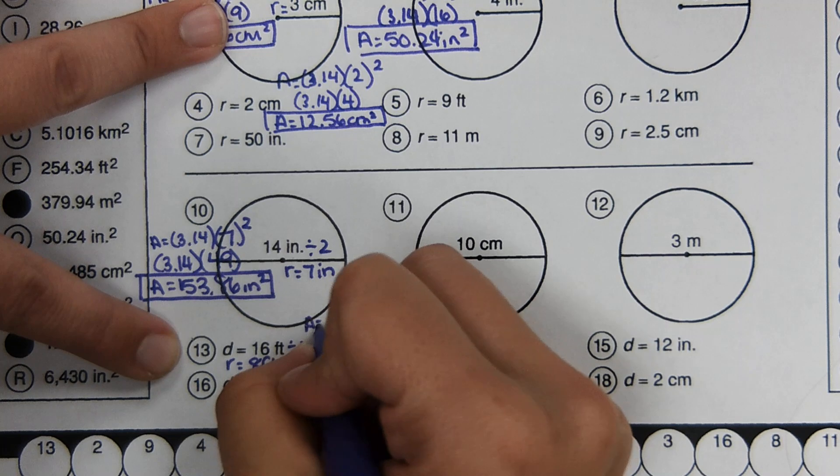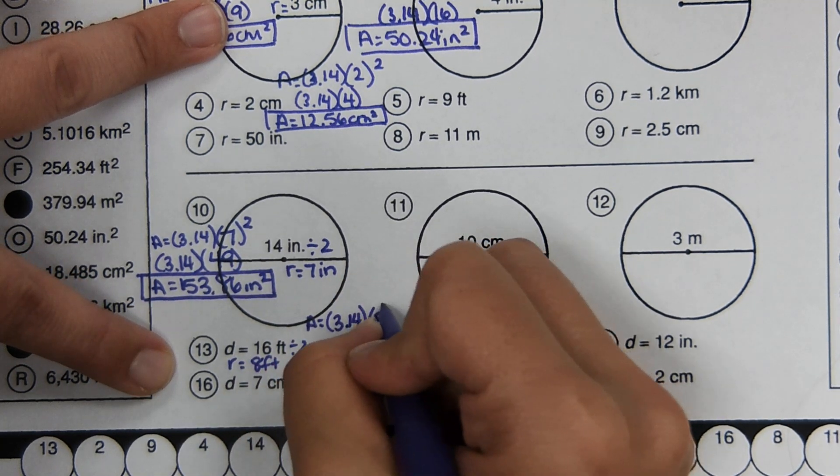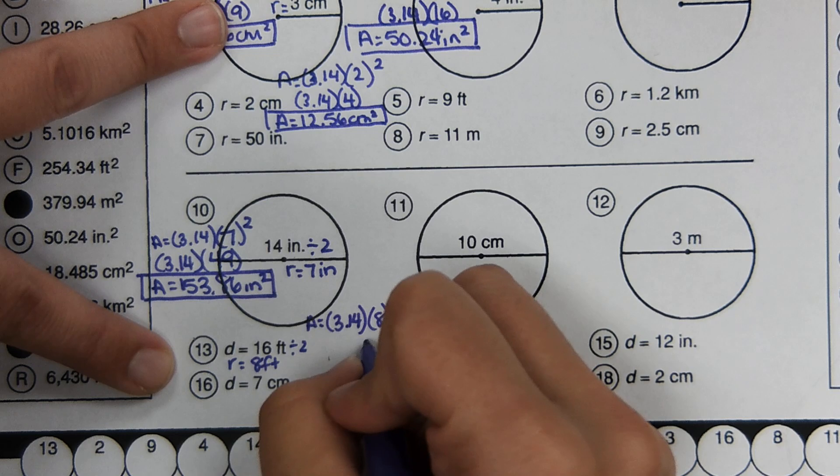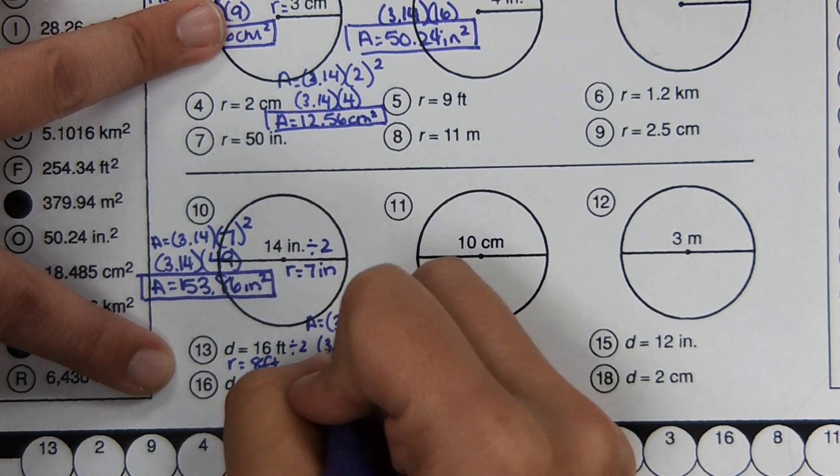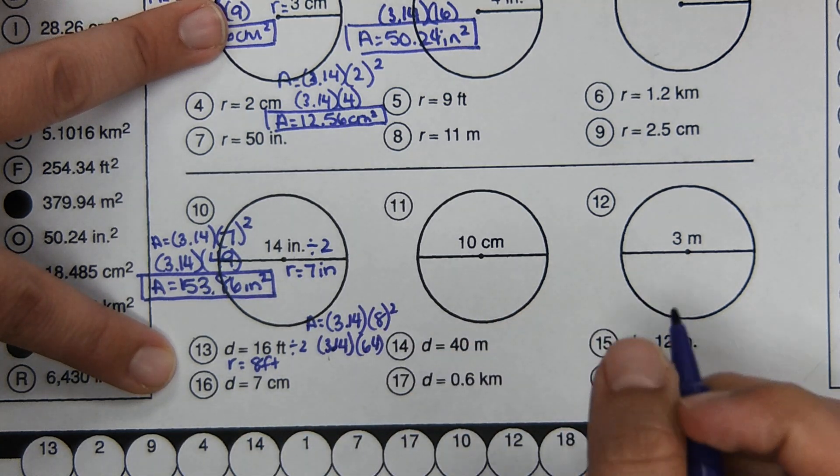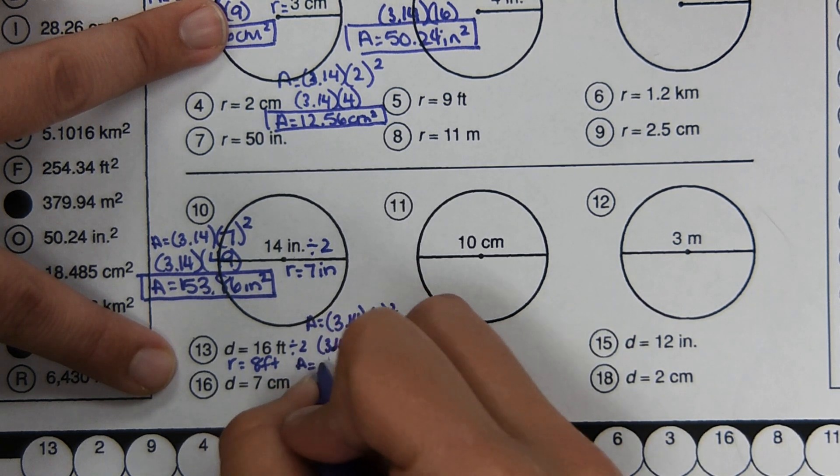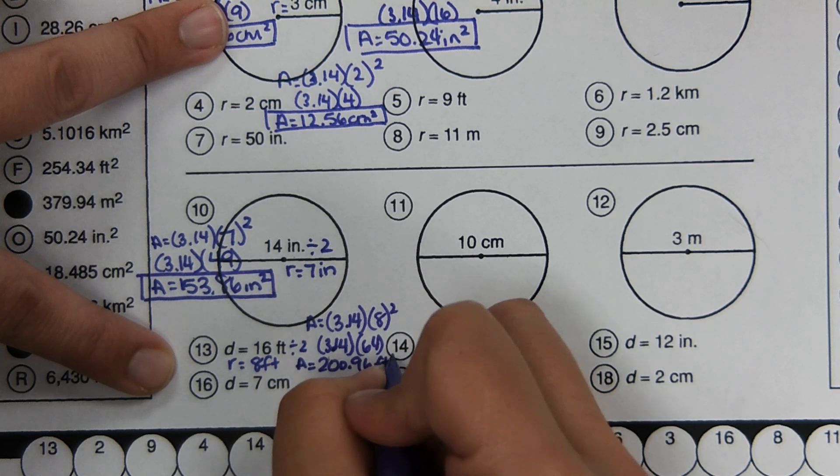And then area equals 3.14. Eight squared. 64 times 3.14. Multiply these two numbers and it comes out to 200.96. Feet squared.